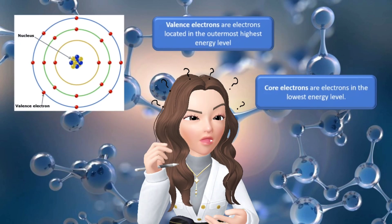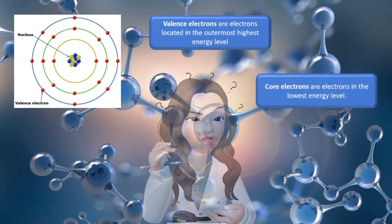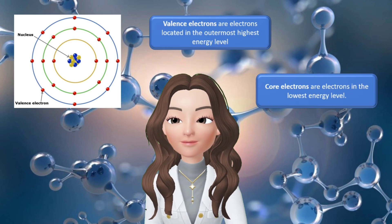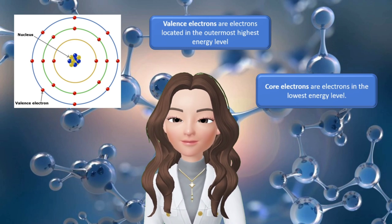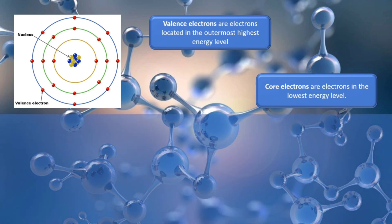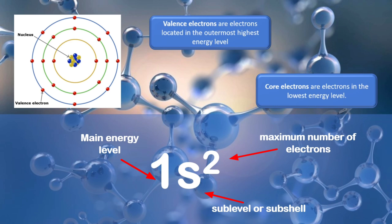Now, how are we going to know how many electrons are present in the core electrons and in the valence electrons? I am going to teach you how, but before that, let us have a recap on how to write SPDF notation. First, you have to write the main energy level, followed by the sublevel, and the maximum number of electrons.